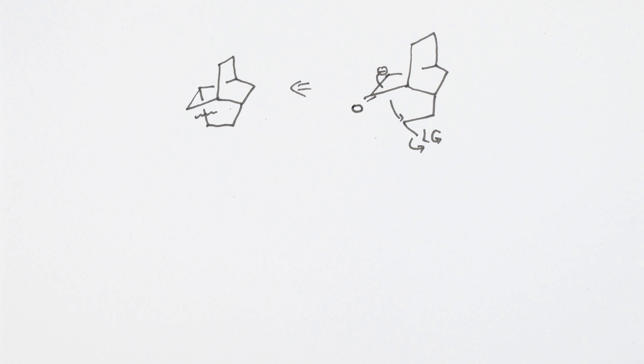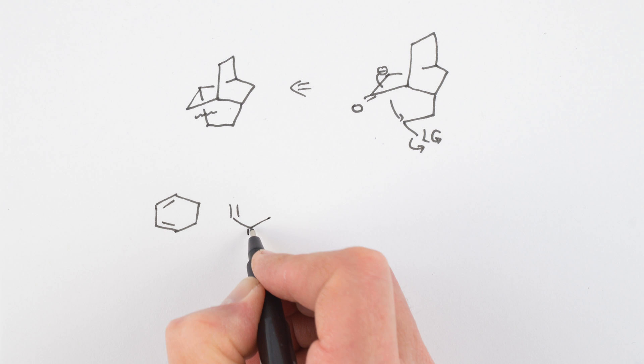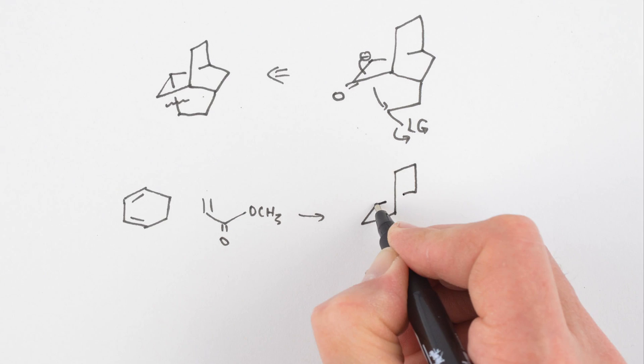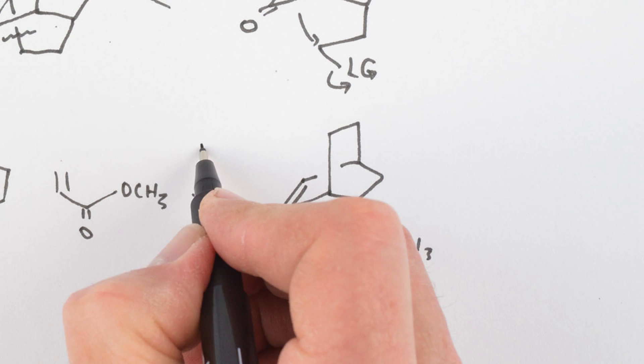The synthesis then involves setting up this system, where the 222 system is the product of an exoselective Diels-Alder reaction between cyclohexadiene and methyl acrylate. An extra carbon has to be added to the chain, and the ketone has to be introduced at this carbon and not over here.